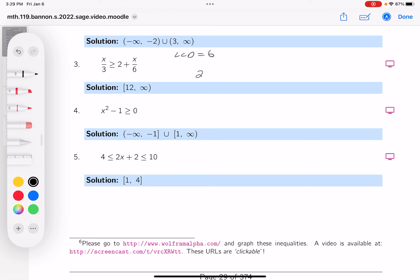What are you going to get? Two X greater than or equal to, well, six times two is 12, and six times X over six is X.